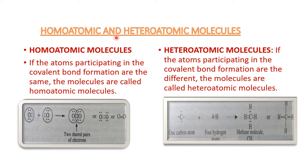Homoatomic and Heteroatomic Molecules. Homoatomic Molecules: if the atoms participating in the covalent bond formation are the same type, the molecules are called Homoatomic Molecules. For example, in the formation of oxygen molecule, the two combining atoms are of same oxygen atoms. The two oxygen atoms share two pairs of electrons between the two combining oxygen atoms to form an oxygen-oxygen double bond — this is an example of a Homoatomic Molecule.